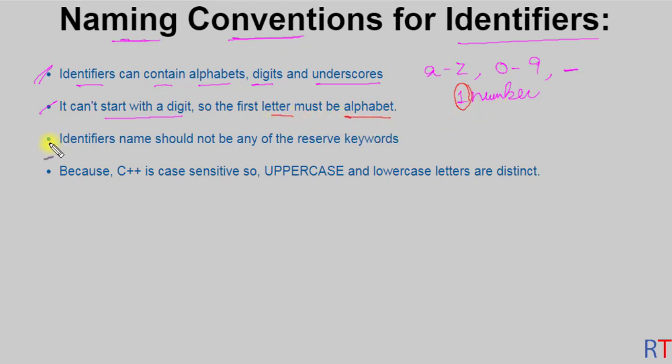Third, an identifier name should not be any of the reserved keywords. That means we cannot create an identifier with the same name as one of the reserved keywords in C++. For example, we cannot create a variable 'int break' because 'break' is a reserved keyword.